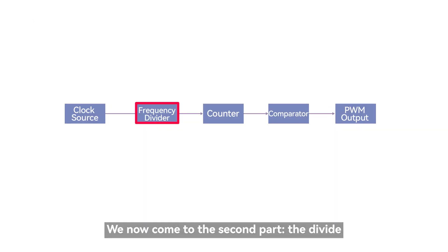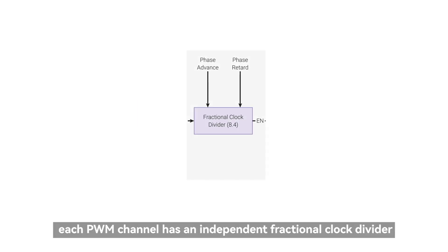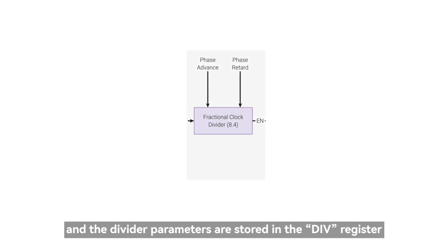We now come to the second part, the divider. Each PWM channel has an independent fractional clock divider, and the divider parameters are stored in a DIV register.